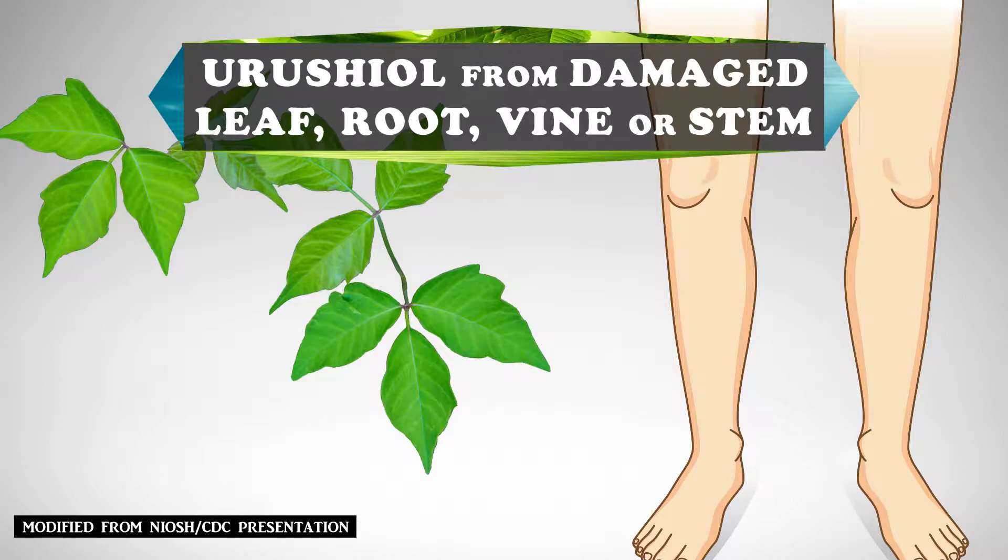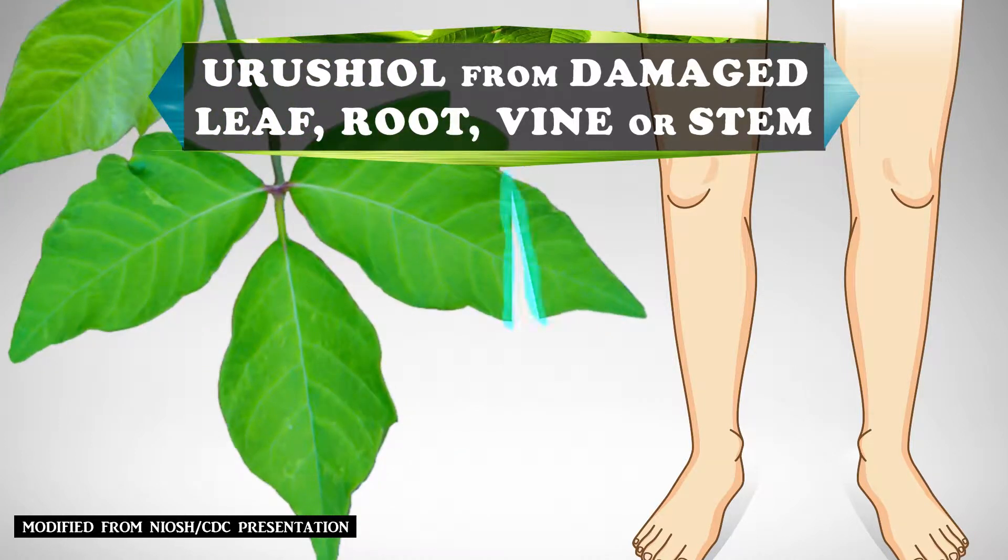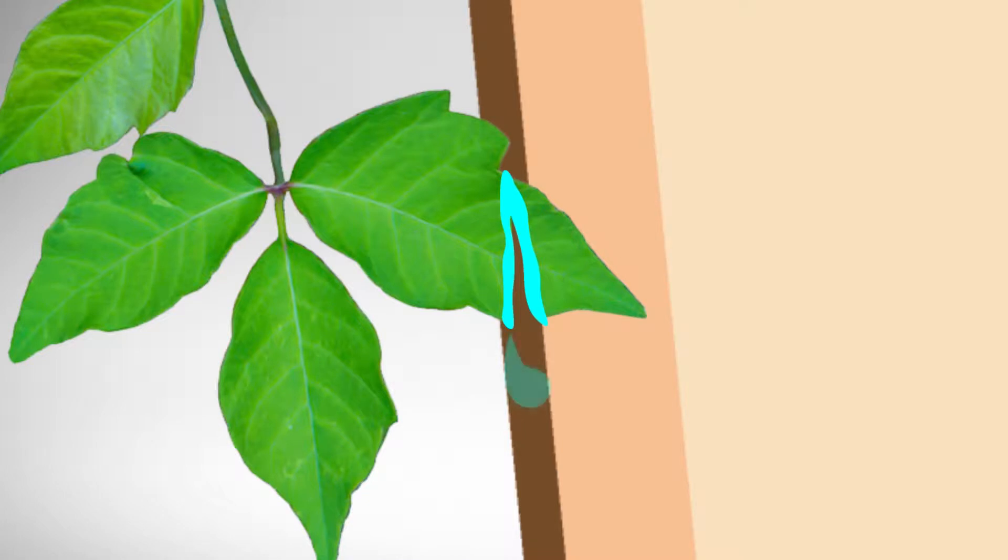Firstly, the poison ivy part, be it the leaf or stem, really needs to be broken or injured to release the inner held urushiol.